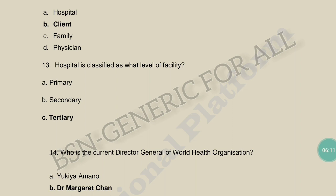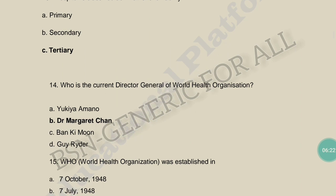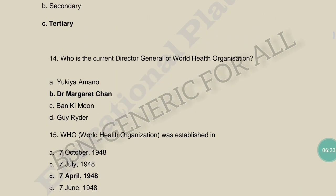Hospital is classified as what level of facility? The options are primary, secondary, or tertiary. Hospitals are large facilities — they are tertiary level facilities.